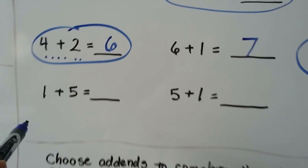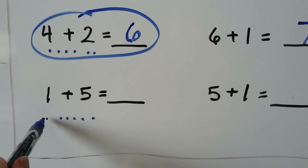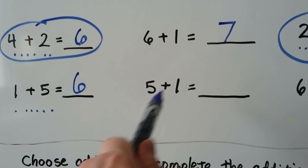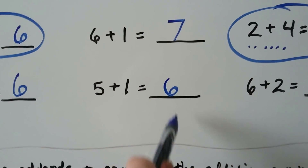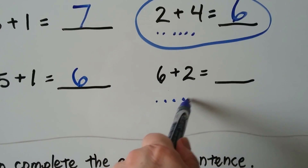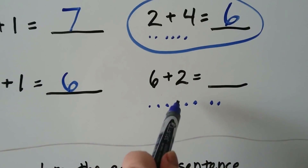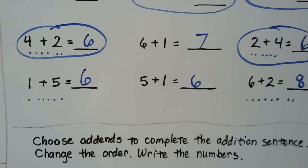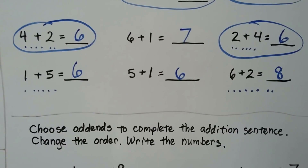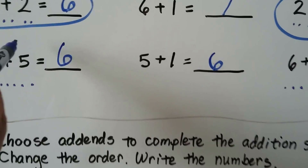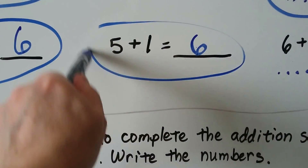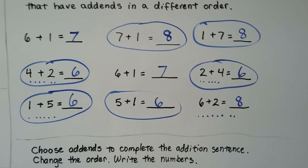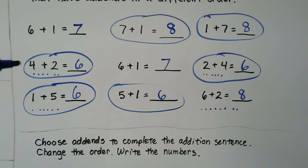1 plus 5 is 6. 5 plus 1 — the addends are just in different order — that's 6. And 6 plus 2 is 8. Which addition sentences in this row have addends in different order? If you said this one and this one, you're right. A row goes across this way — that's a row, that's a row, and that's a row going straight across.